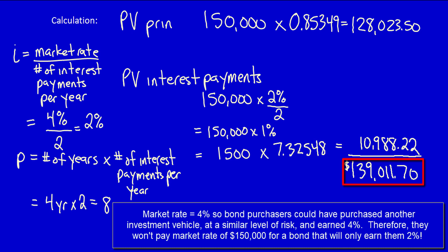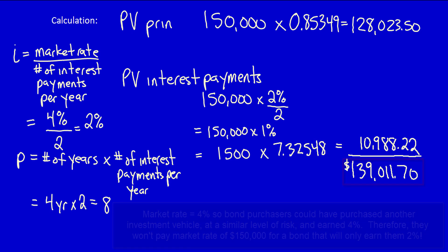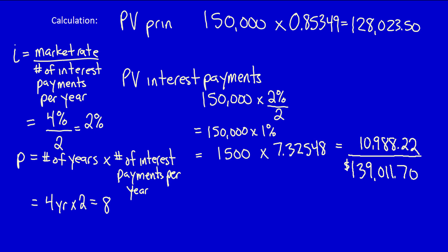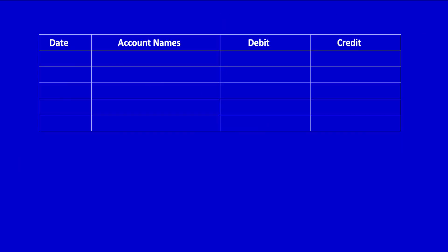Therefore, bond purchasers will bid down the value of the bond until the yield — the actual effective interest rate they earn — equals what the market offers: 4%. So bond holders are only willing to pay $139,011.70, which we round to $139,012. The journal entry on January 1st, 2021: Orange Corporation received cash of $139,012 (debit), and gave away a promise to pay bond holders in the future — a liability called bond payable for $139,012 (credit). This uses the net method.